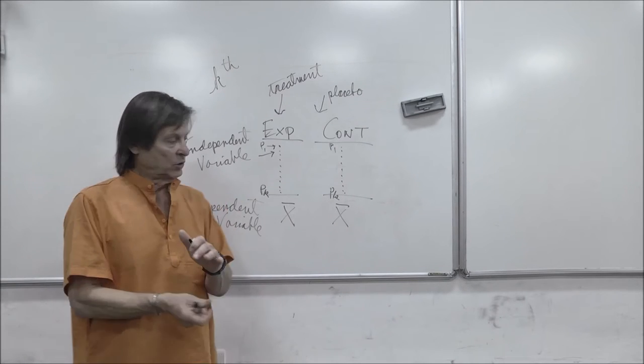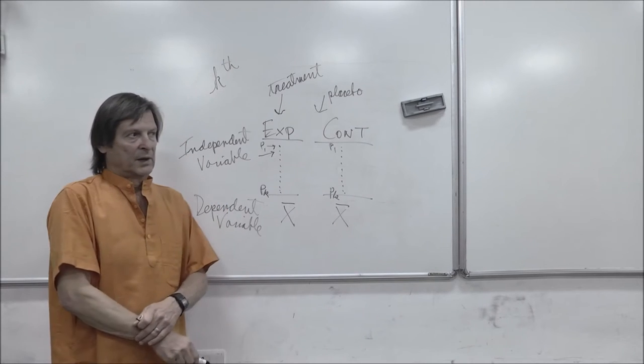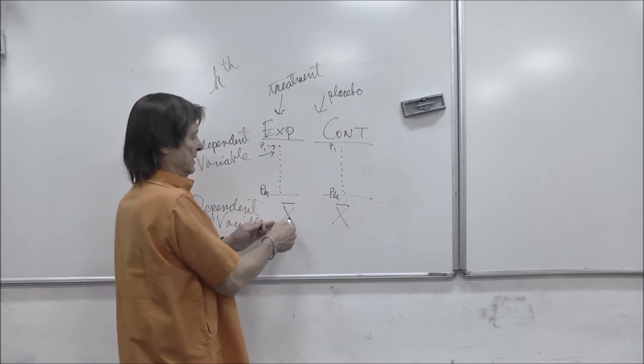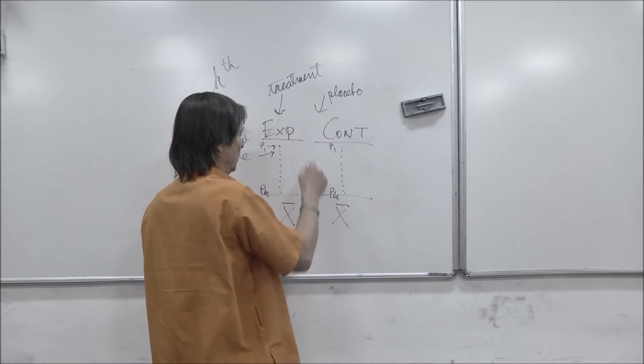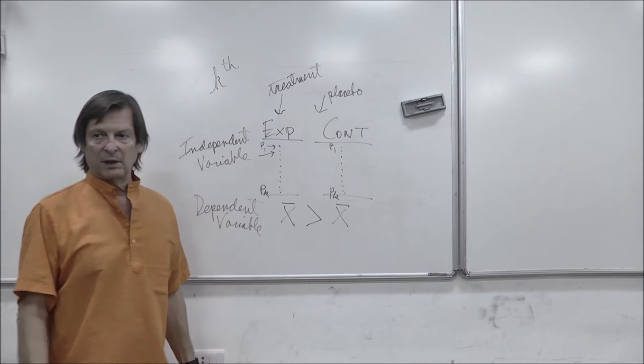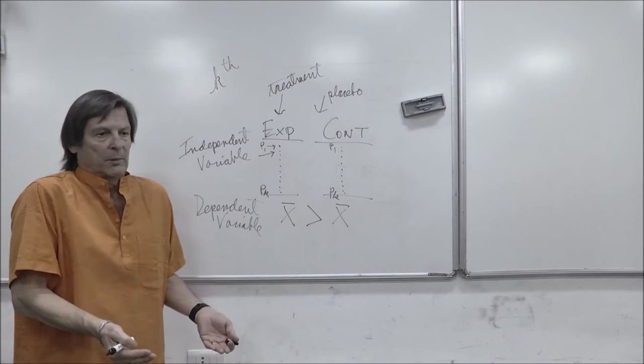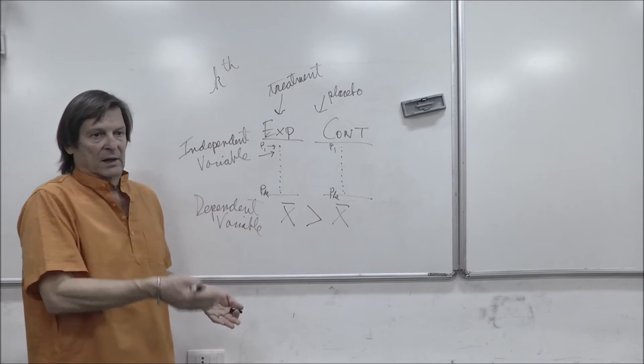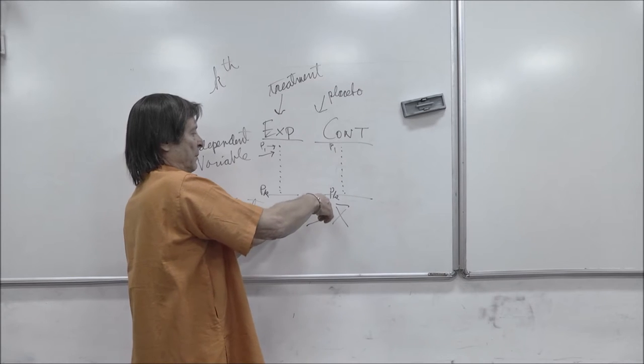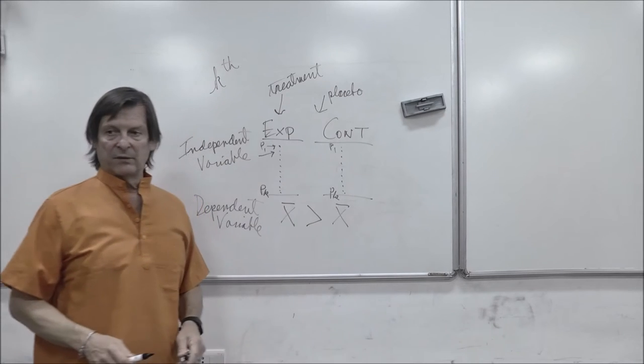If on this measuring scale, this dependent variable, it's how much better you feel, then we might expect that this mean, if the treatment works, is going to be better or bigger than this mean. If it lowers our pain, and it's a pain scale, 10 is maximum pain, then we'd expect that this mean might be lower than this mean because of this treatment.